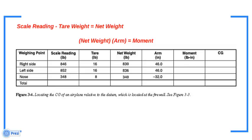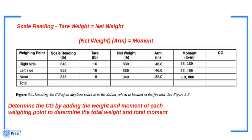Multiply each net weight by its arm to determine its moment. Determine the CG by adding the weight and moment of each weighing point to determine the total weight and total moment. The CG is then determined by dividing the total moment by the total weight.